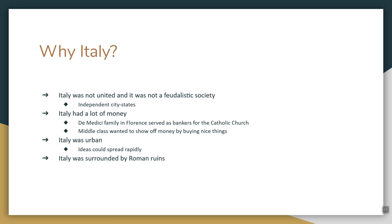Why did the Renaissance start in Italy? Italy was still a bunch of independent city-states — it never became a feudalistic society with knights and lords. Italy was about money. One of the wealthiest families of all time, the de' Medici family in Florence, served as bankers for the Catholic Church, which had tons of money. When you have money, you want to show off. Italy being urban meant ideas could spread quickly. And Italy had the Roman ruins around them, which made them look back to the old days — Rome used to be great, Italy can be great again.